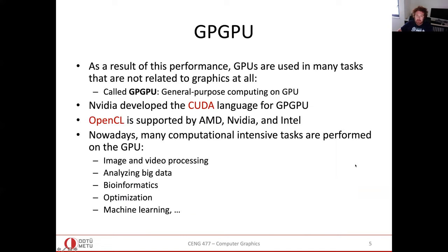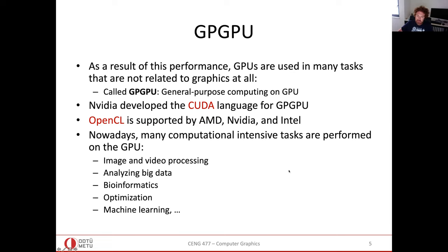That demo was from 2008. The parallelism doesn't only apply to computer graphics — the massive parallel architecture of GPUs can be used in other applications. We call it GPGPU: general purpose computing on GPU. Specific languages for that include CUDA and OpenCL. Many computationally intensive tasks that tend to be parallel and independent are implemented on GPUs — image processing, video processing, bioinformatics, machine learning, etc.